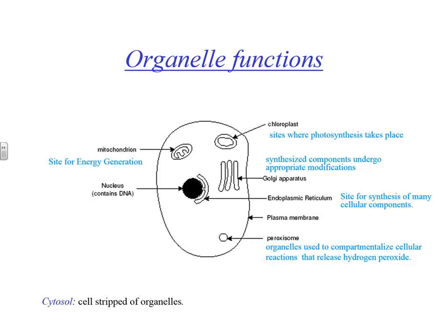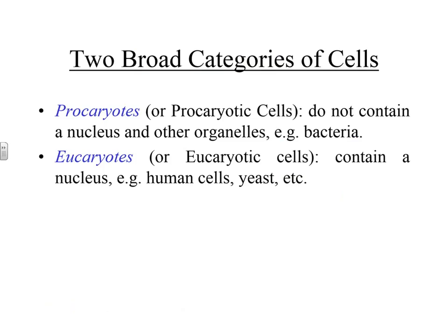The mitochondrion is the site for energy generation. The chloroplast, present only in plant cells, is the site for photosynthesis. The endoplasmic reticulum is where many cellular components are synthesized. The Golgi apparatus is where synthesized components undergo appropriate modifications. There is also the plasma membrane and the peroxisome. And of course there's the nucleus — probably the most important organelle because it contains the DNA. All the genetic information of the cell is contained in the nucleus. The cytosol is the interior of the cell with all organelles removed — basically a gel inside.